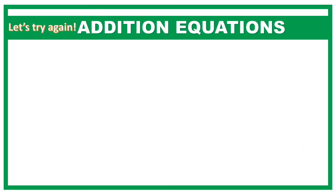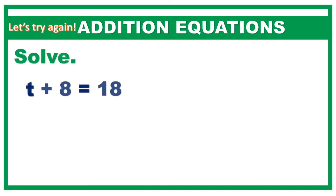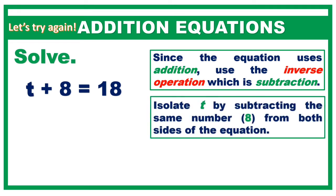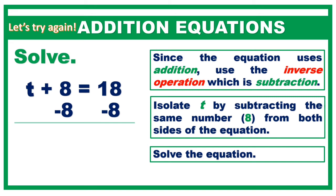Let's try again. Let's solve t plus 8 equals 18. Again, since the equation uses addition, use the inverse operation which is subtraction. Isolate t by subtracting the same number, 8, from both sides of the equation. Minus 8, minus 8 — that cancels 8, leaving t isolated. Bring down the equal sign and the answer to 18 minus 8, which is 10.